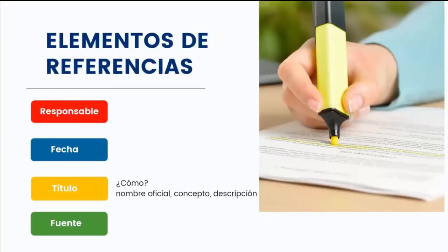Cuando ya terminamos de hacer nuestra cita, tenemos que hacer nuestra referencia, y es aquí donde se incluye el color amarillo para destacar el título. El título es el nombre por el que es conocida nuestra fuente de información consultada. Si consulté la página oficial de la NASA, le pongo NASA MX si es la versión en México. Si mi documento se llama de cierta manera, así le pongo, tal cual, aunque suene como una canción. En el caso de los videos, a veces no tienen título, pero podemos poner hasta 20 palabras que describan el contenido.